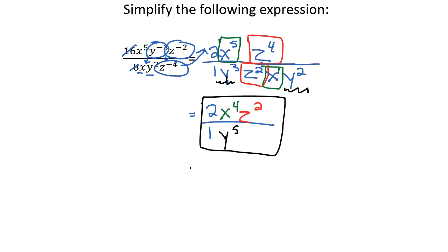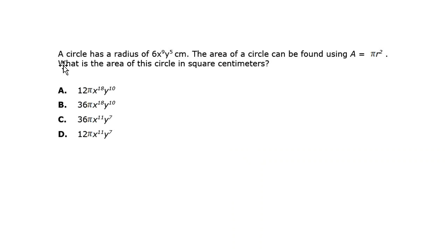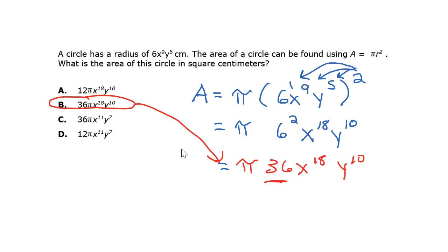There are a couple of extra practice problems at the end of the video. The first is another circle problem — go ahead and pause the video, work it out, and press play when you're ready. For this problem, the answer is choice B, found by substituting the radius of 6x to the ninth y to the fifth, then distributing the exponent of 2 to all of the exponents inside the parentheses.